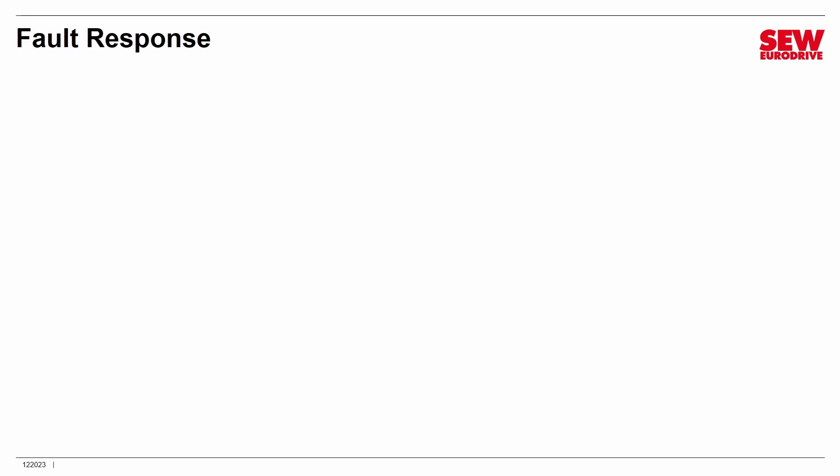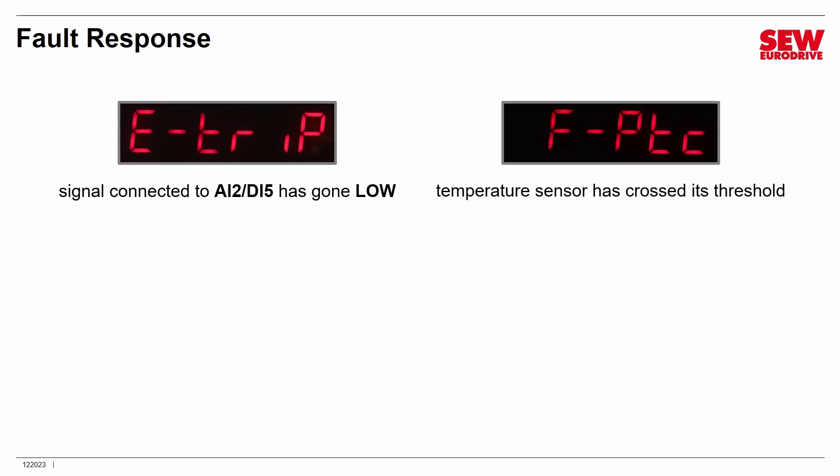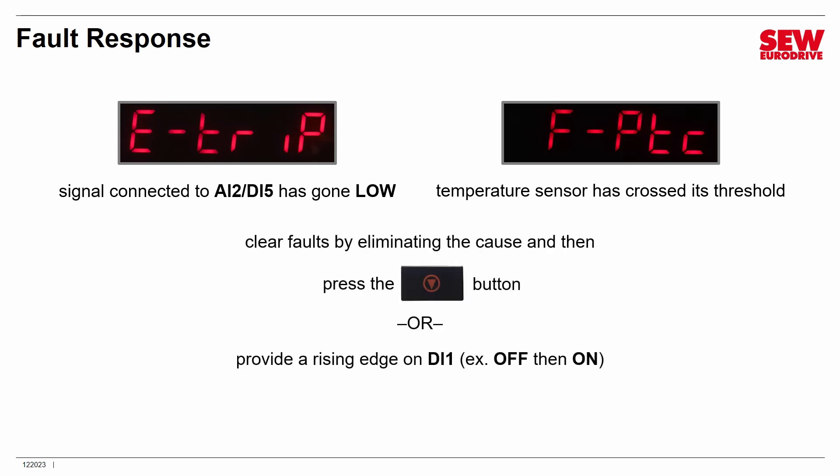If you have it wired as a generic fault sensor, when digital input 5 goes low you will get the message ETRIP on the VFD's display. If configured as a temperature sensor with its type set, you will see F-PTC instead — meaning the temperature sensor has tripped digital input 5. To clear the fault, first eliminate the cause (such as allowing the motor to cool), then clear the fault by pressing the stop button on the VFD or by providing a rising edge on digital input 1 — turning it off and then on again.